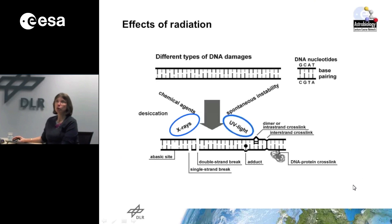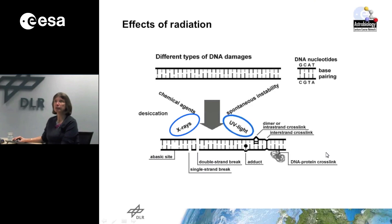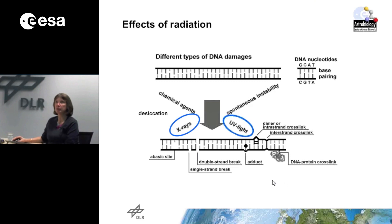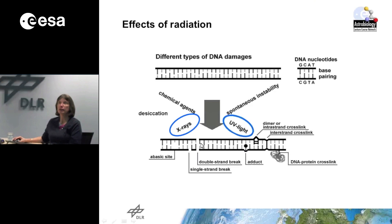In addition to those two types of damage, both types of radiation can also induce a whole variety of other damages in DNA, like abasic sites, single and double strand breaks, formation of adducts, and DNA-protein crosslinks. All these damages have to be repaired in cells before replication; otherwise harmful mutations might be induced or the cells might die. Therefore DNA damage is very severe and must be repaired.